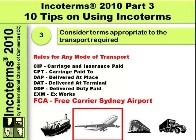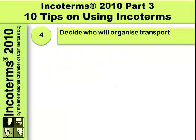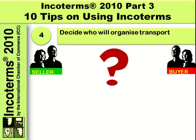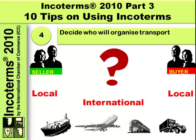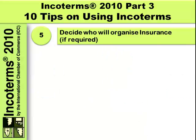Tip number four: decide who will organize the transport. The seller and the buyer have to organize the transport from the seller's country to the buyer, and that can involve local transport in either of their two countries as well as the main carriage of international transport.